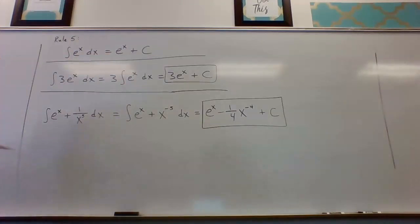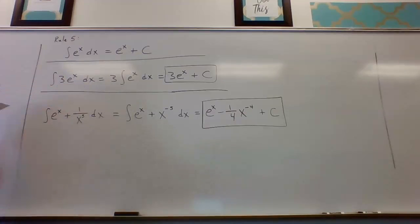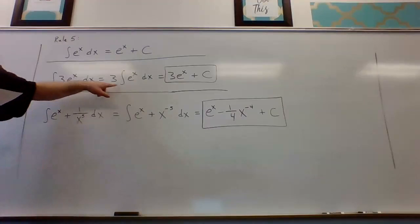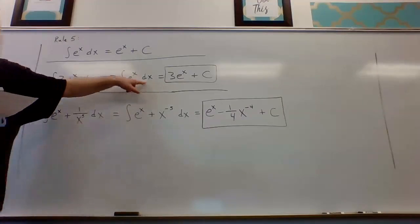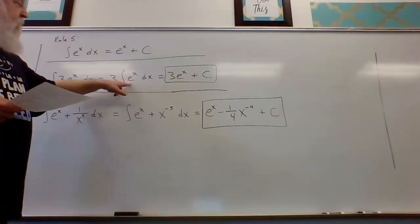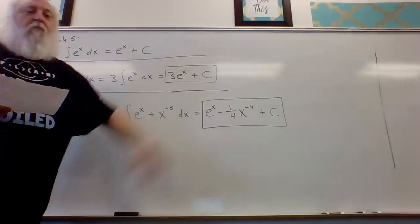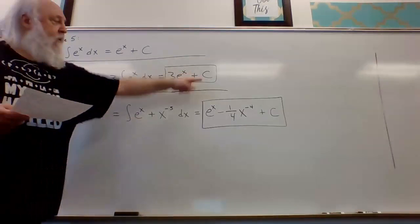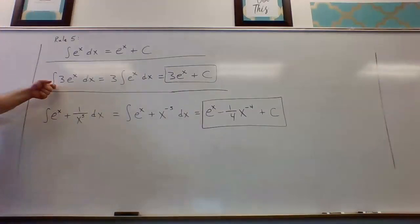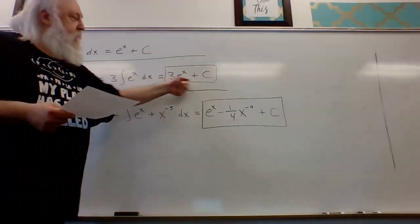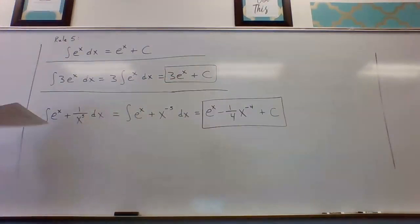In example one, we find the antiderivative of three times e to the x with respect to x. Three is a multiplicative constant, so we put it in front of the integral sign: three times the antiderivative of e to the x. The antiderivative of e to the x is e to the x, so the result is three times e to the x plus c.